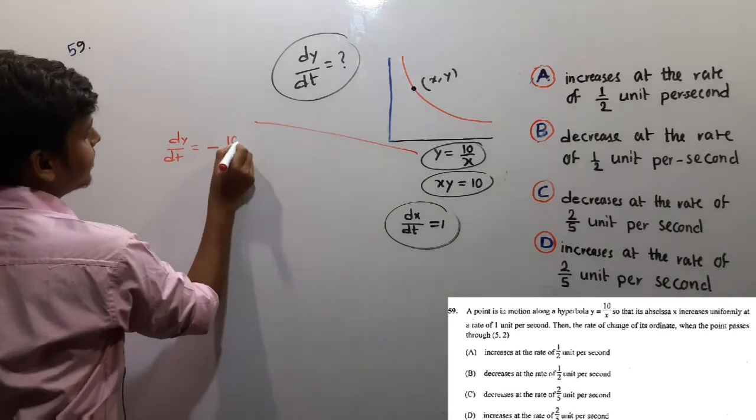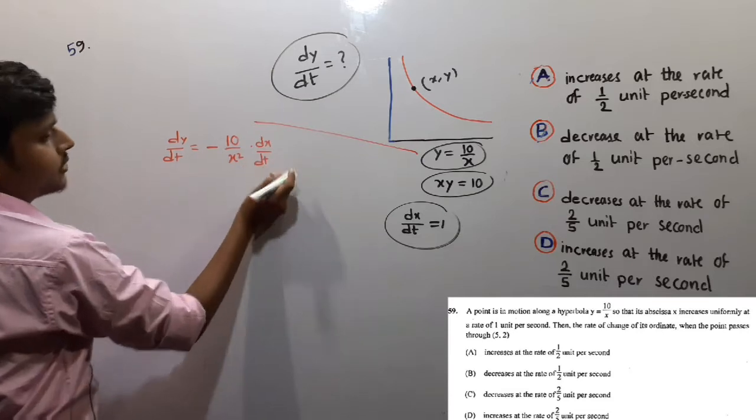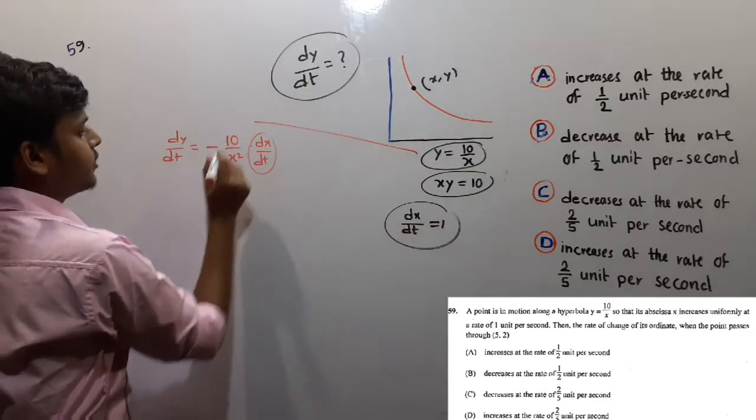dy/dt equals -10 by x square times dx/dt. As we know dx/dt equals 1, so this equals 1.